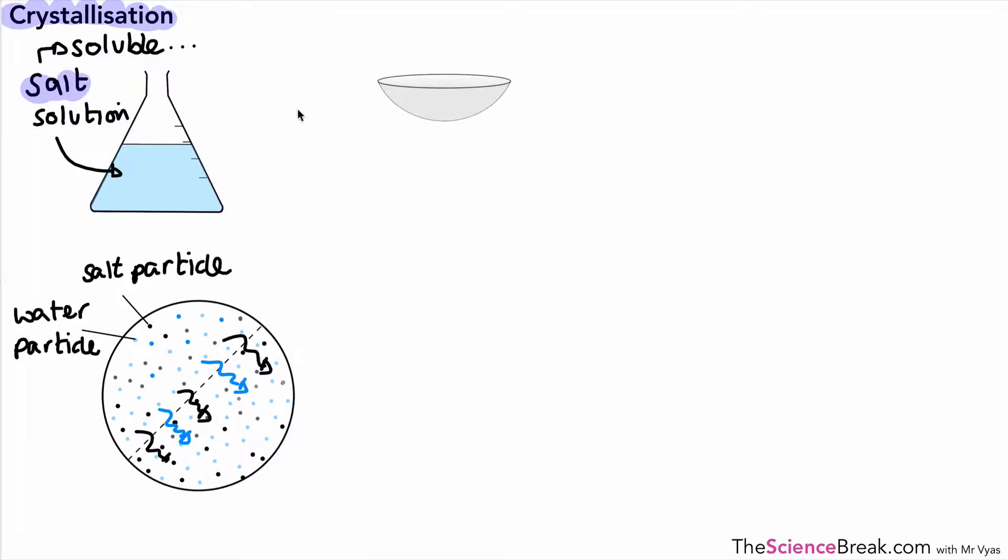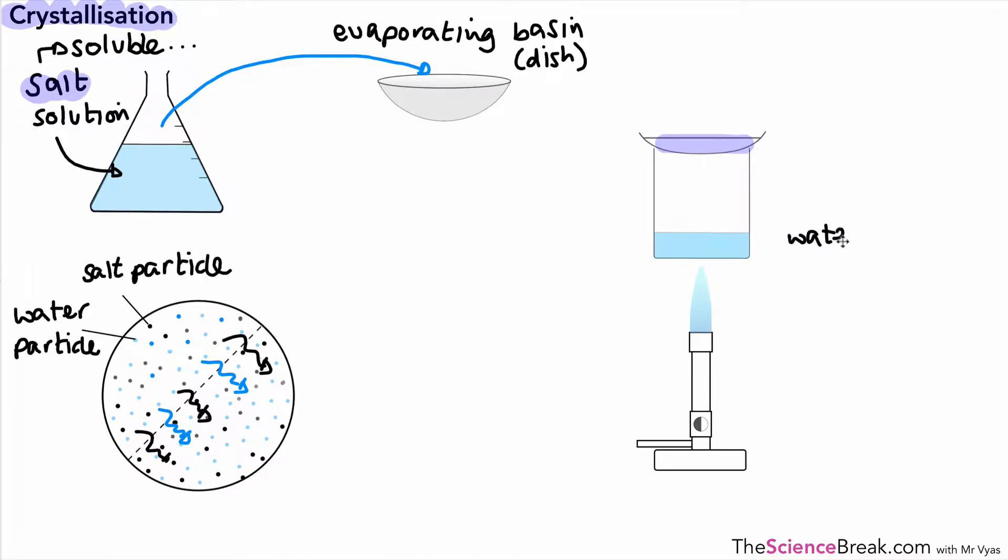So we use something called crystallization. We need a piece of apparatus called an evaporating basin or sometimes called an evaporating dish. We basically put our solution into the dish, into the basin and let it evaporate. The water will evaporate, leaving the salt behind. But we give it a little helping hand. Here we've got a setup of apparatus. There's a beaker with water, there's a solution in the evaporating dish. This is just ordinary water being heated by a Bunsen burner. So the water gets heated, evaporates, and that warm water vapor will then gently heat the evaporating dish with the solution inside.